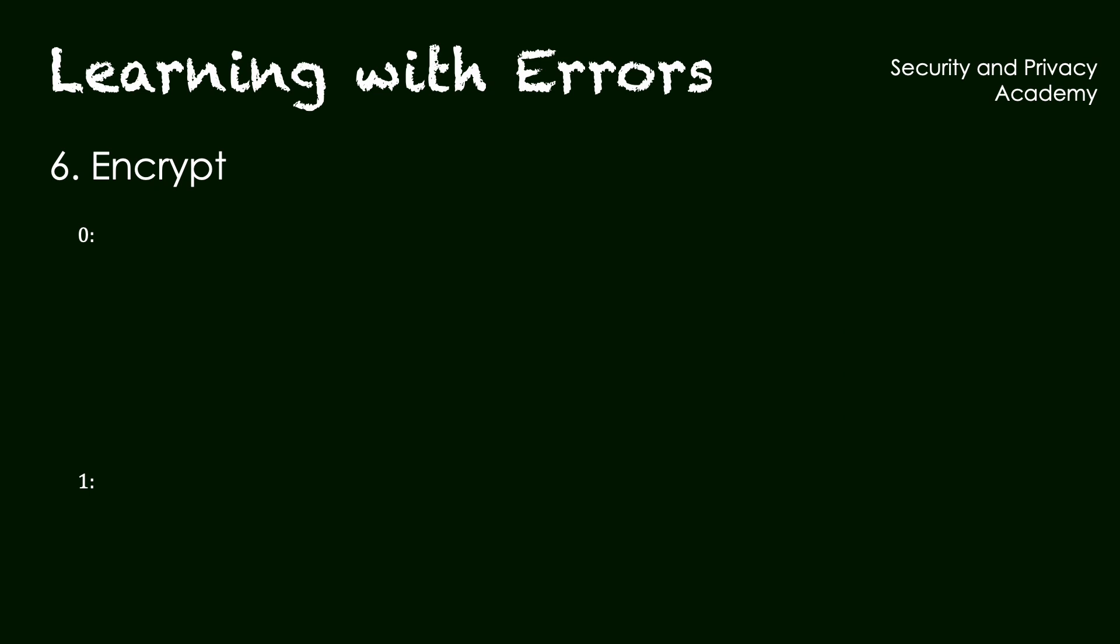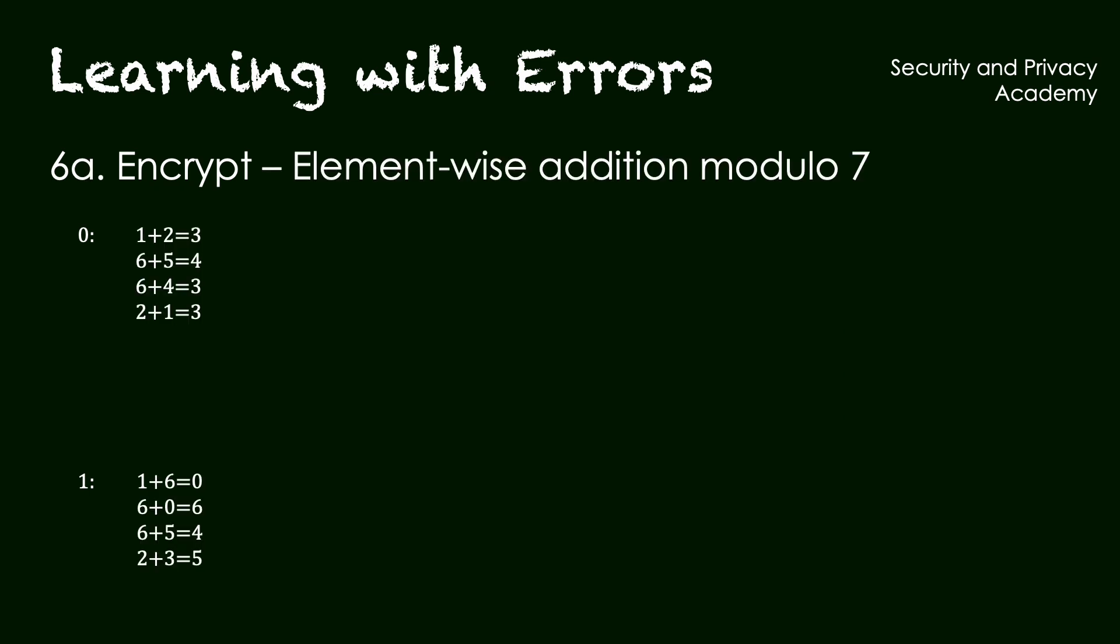For both zero and one, we first sum up the individual elements of the ai modulo 7. Next, we add up the associated values for bi.